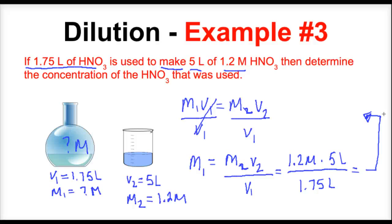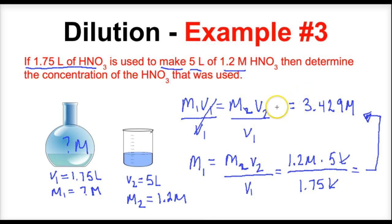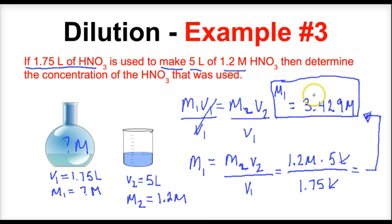We end up with 3.429 — the liter units cancel, leaving us with molarity — so M1 = 3.429 M. That is the molarity of the stock solution. This is dilution, and I hope this was helpful.